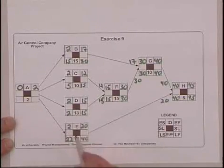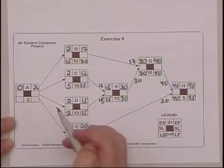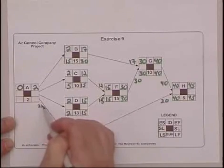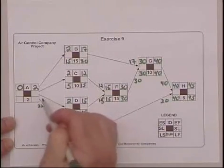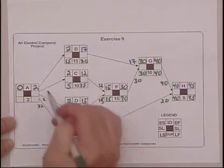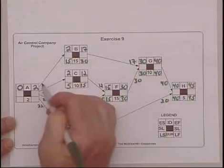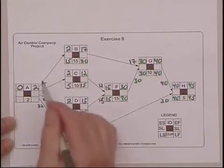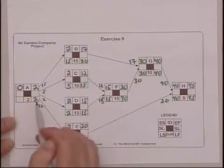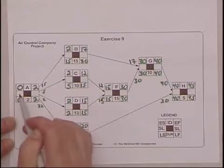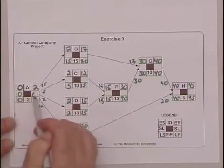And then we've got a bunch of arrows out of activity A. We got a late start of 22, a late start of 2, a late start of 5, and a late start of 15. We choose the smaller number, 2. 2 minus 2 is obviously 0. And when you have that, you know you're in good shape.